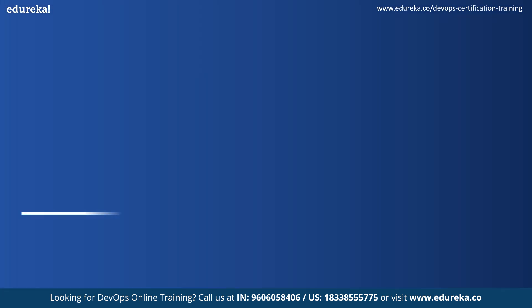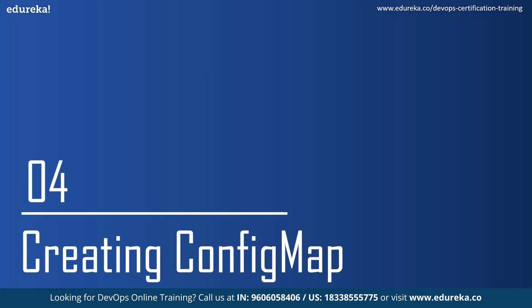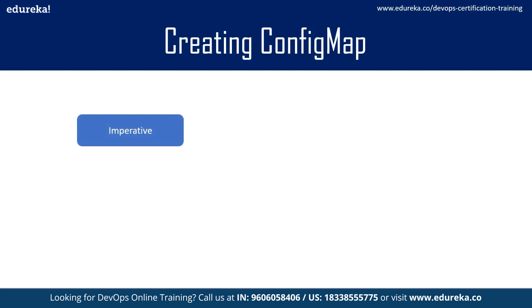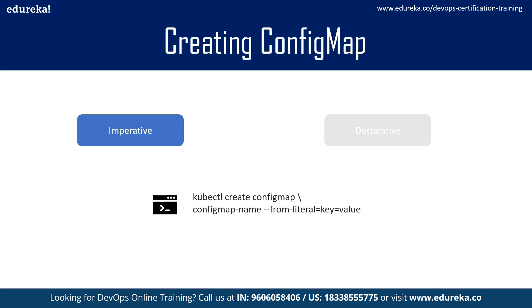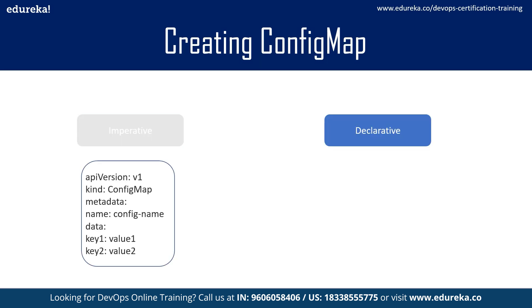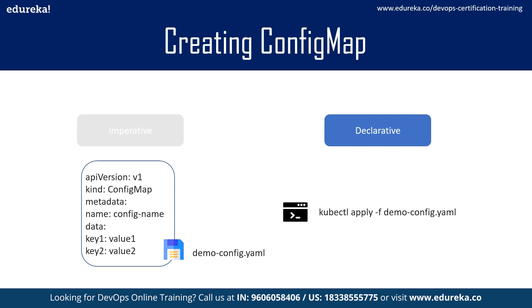There are two ways you can create config maps: the imperative approach and the declarative approach. With the imperative approach, you use the kubectl command followed by config map, the name of the config map, and the key-value pair with the --from-literal parameter, meaning you pass the key-value directly during creation. With the declarative approach, you use the file structure of a config map, define key-value pairs inside it, save the file with a .yml extension, and then run the kubectl apply command providing the saved file.